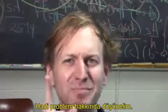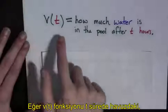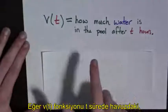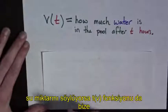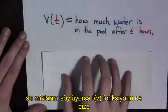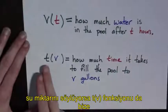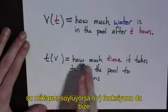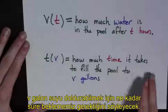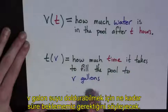Let's think about this problem. If v(t) tells you how much water is in the pool after t hours, then its inverse, which I'll call t(v), tells you how much time it takes to fill the pool to v gallons.